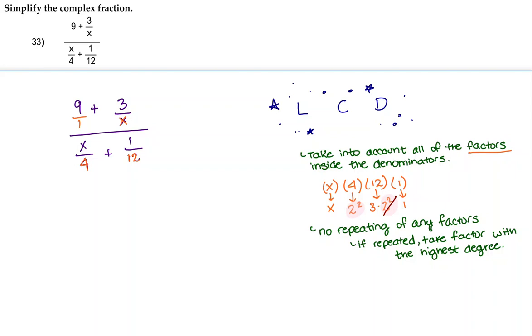So the factors that we're going to take into account in our LCD are going to be x, 2 to the power of 2, 3, and 1. And when I combine all of those together, that's going to give me 12x. So my LCD is 12x.